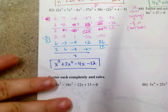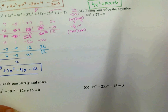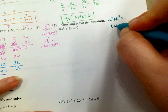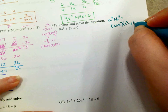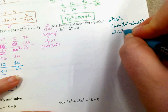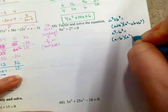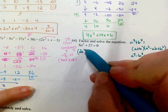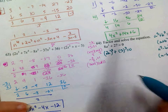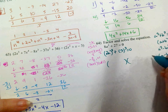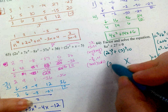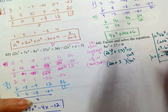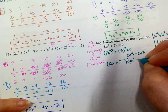Number 64: factor and solve the equation. This is a sum of perfect cubes. The formula is a cubed plus b cubed equals (a plus b)(a squared minus ab plus b squared). Here 2a is being cubed and 3 is being cubed. So we get (2a plus 3)(4a squared minus 6a plus 9).